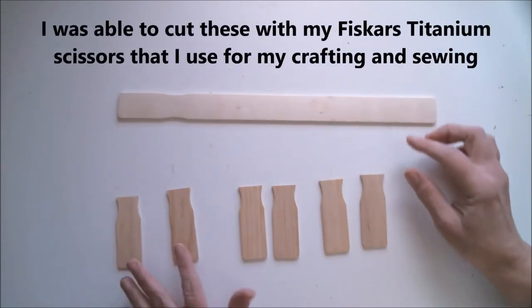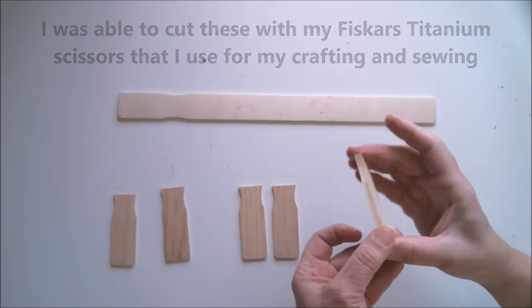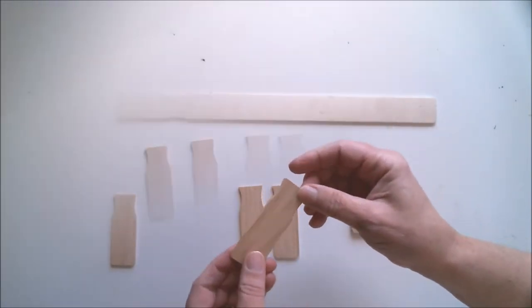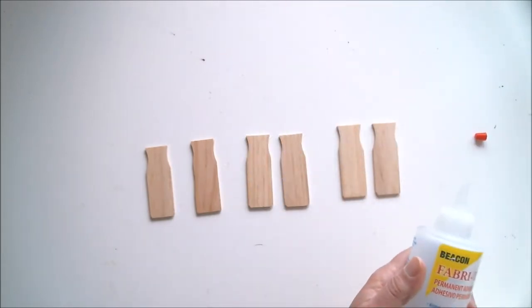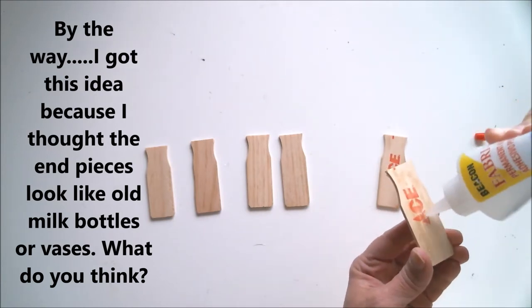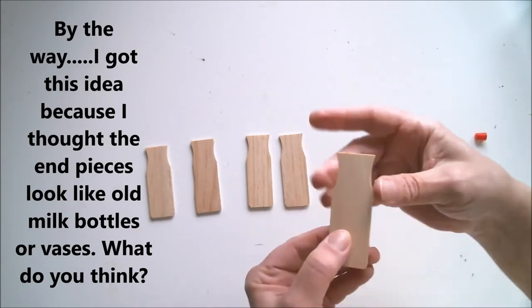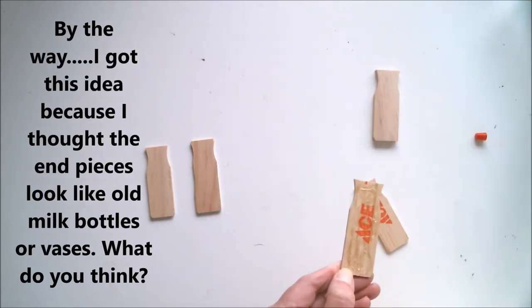For today's project, you can use them as they are, or you can glue two of them together to make them thicker. It's totally up to you. I'm going to be using my Beacon Fabri-Tac to glue some of these together, and I'm going to glue the printed sides together so they won't show on either side. I'm going to use the thicker ones for the refrigerator magnets, and the thinner ones will be perfect for embellishments.